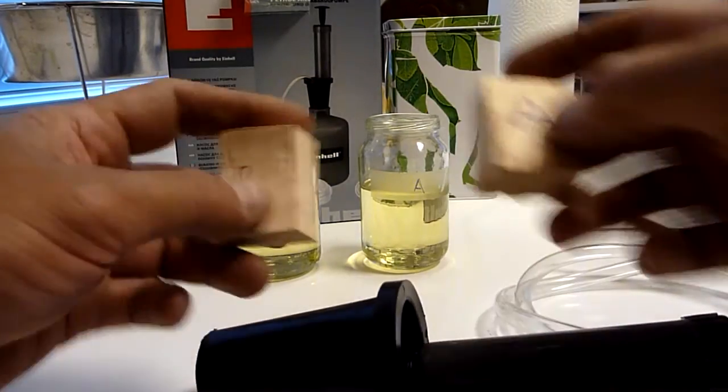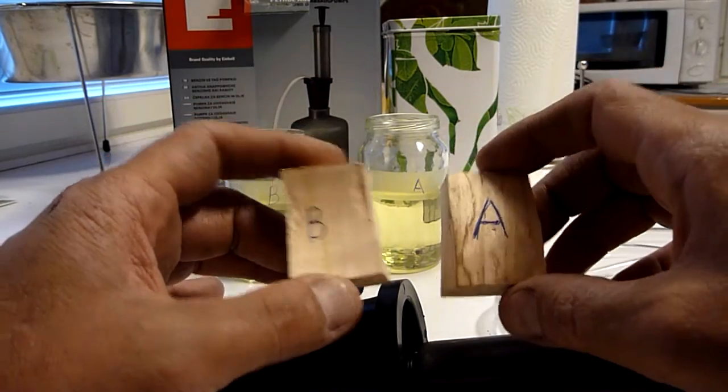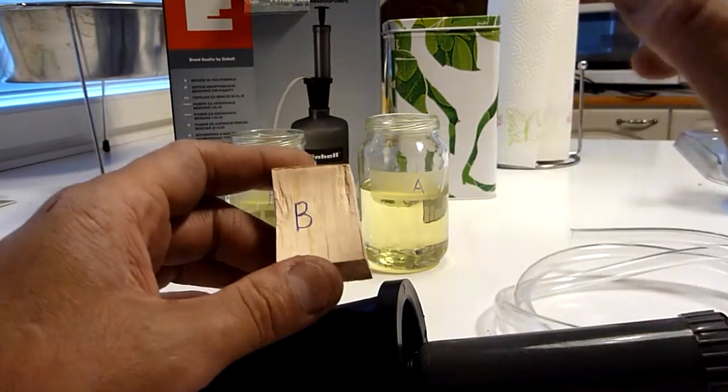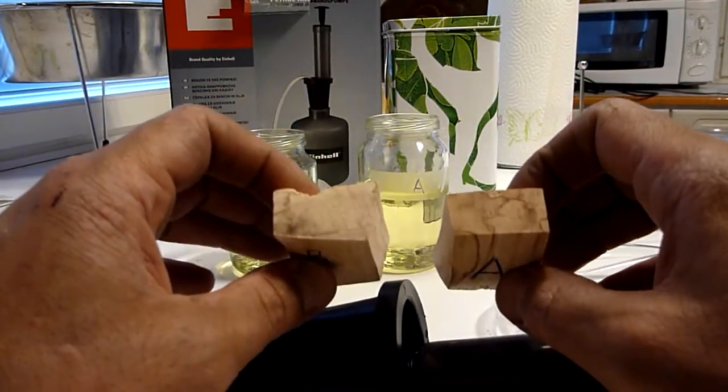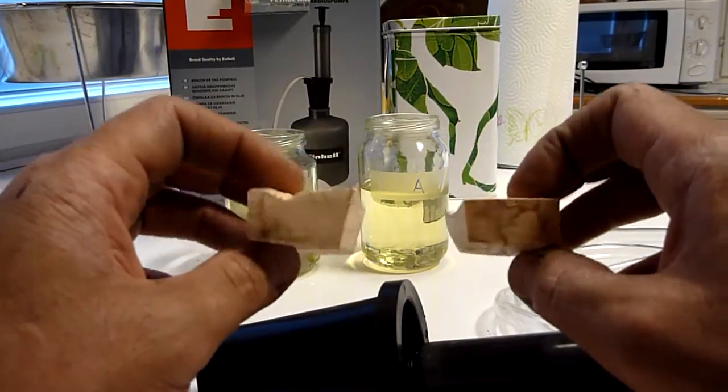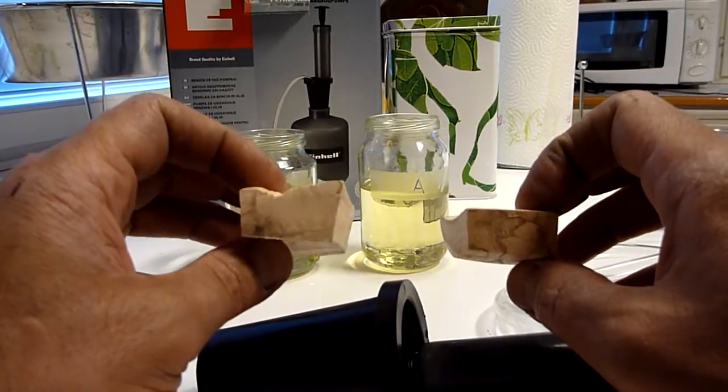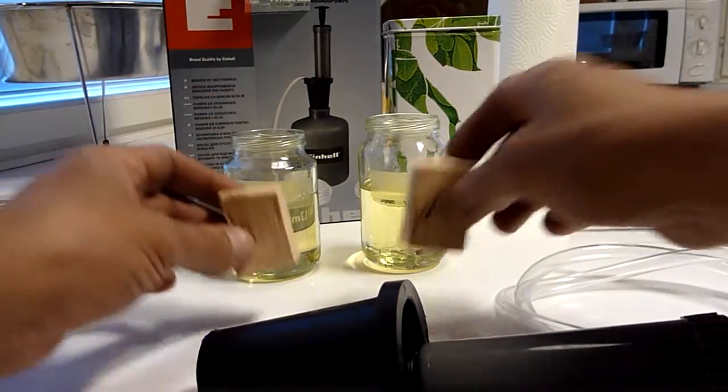And here are the fairly same size piece of wood, test piece A and B. This wood is birch. I thought this is sort of neutral density wood and also it's the wood that I use quite often. So I thought this is a good piece to test.